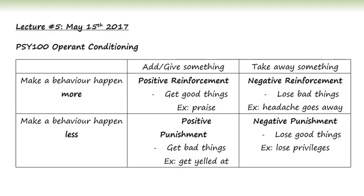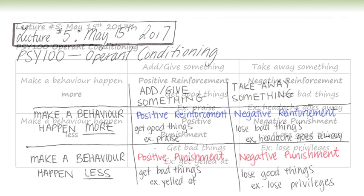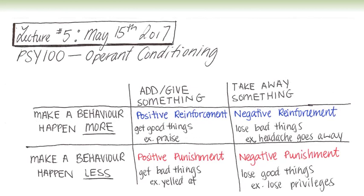In this example, a table has been made to show the different ways to make a behavior happen more often and how to make a behavior occur less often. This is the handwritten version of the same matrix.